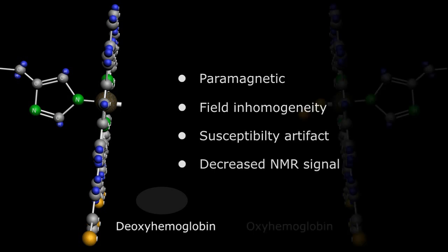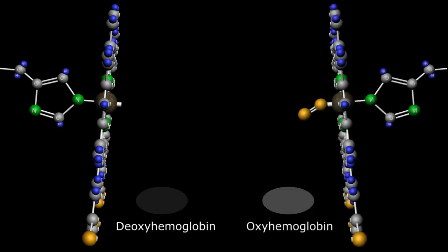So in summary, oxyhemoglobin shows up brighter than deoxyhemoglobin on a T2-weighted image.